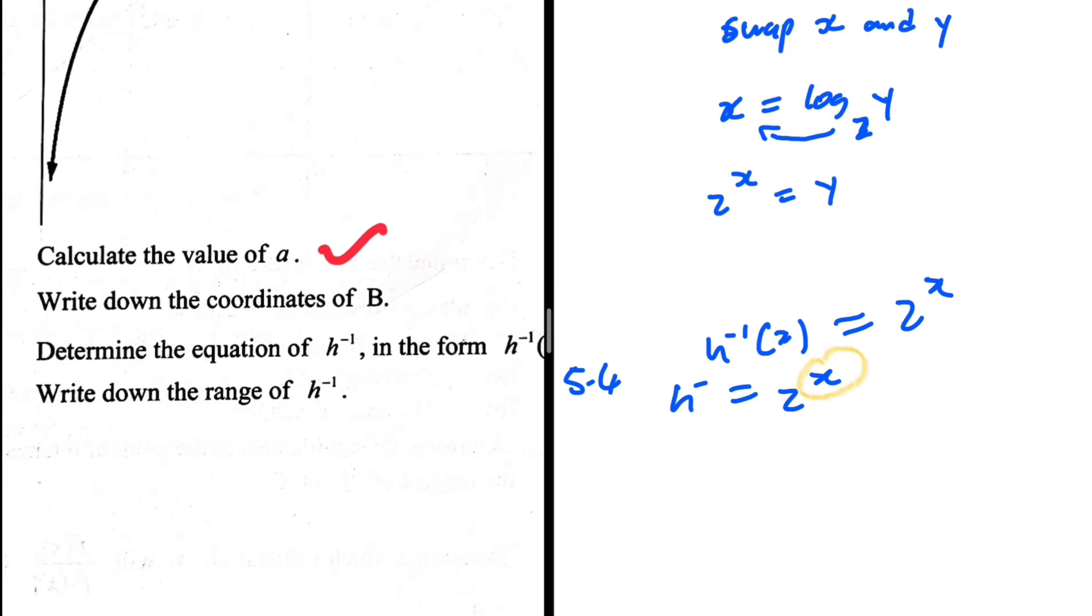Because we have a base of 2, no matter what you substitute in place of x, you'll never get a negative value and never get zero. There's nothing you can substitute for x that gives zero. If you substitute minus 1 billion, your calculator will give zero, but the answer isn't really zero—it's just 0 point a lot of zeros. The range is y > 0. h inverse cannot be zero or negative, y is greater than zero all the time for h inverse.